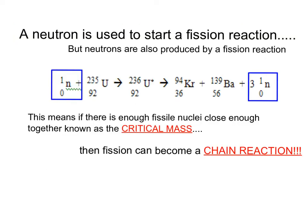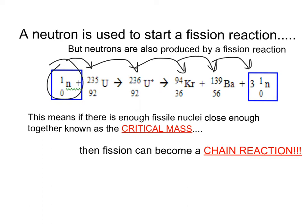Since we use a neutron to start fission, a neutron comes in and hits a stable piece of uranium, which turns it into unstable uranium. That then splits apart and also releases three other neutrons — in other words, I started with one neutron and have now made three.